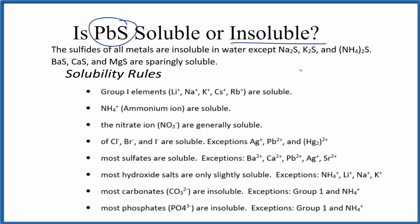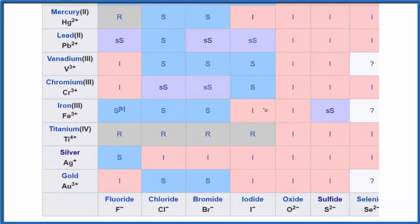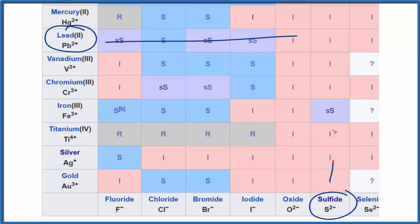Let's look at a solubility chart just to double check. This is a portion of a larger solubility chart — there's a link in the description to the whole table. We find lead 2 here, and we're looking for sulfide right here. We go over and then up, and we have an 'I', which stands for insoluble. So just like the solubility rule, we can say that lead 2 sulfide is insoluble — when we put it in water, it won't dissolve.